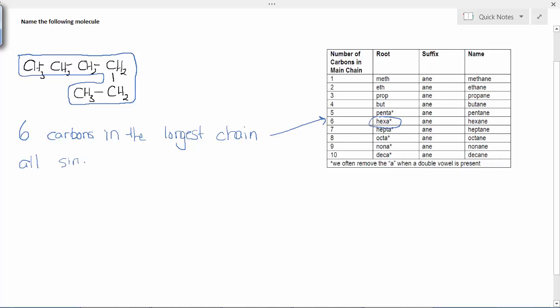And because there are only single bonds shown between the carbon atoms, the suffix here must be ane. When I put this all together, I'm going to find that this molecule is called hexane. This will take a little bit of time to get used to, but we're going to try a number of practice problems in class. You'll get the hang of it.